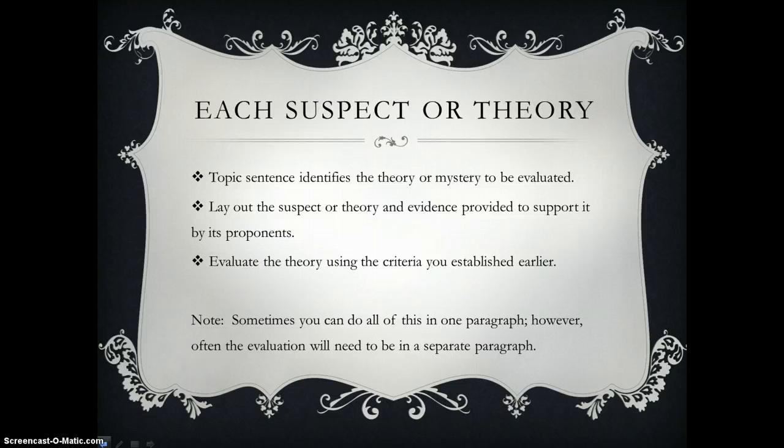Now, sometimes for each suspect or theory, you can do this all in one paragraph, because there's just not that much to write about. However, sometimes there's more, there's more evidence, there's more evaluation that you need to do. If that's true, you do your topic sentence and your theory or suspect in one paragraph and do the evaluation in a second paragraph. Just make sure that paragraph is still fully developed. It's not a little three-sentence paragraph.